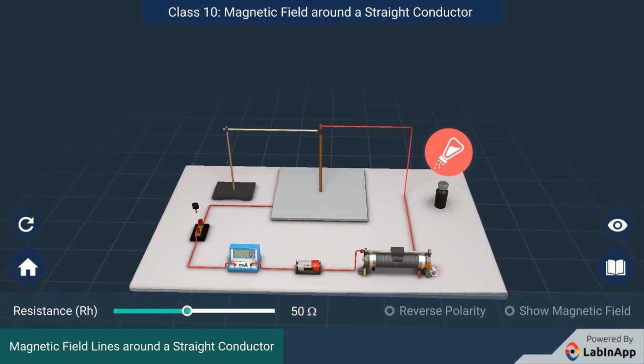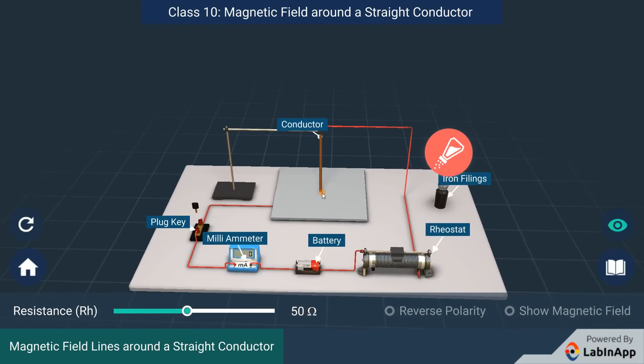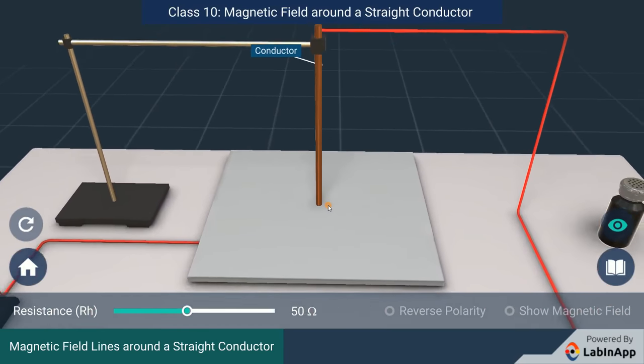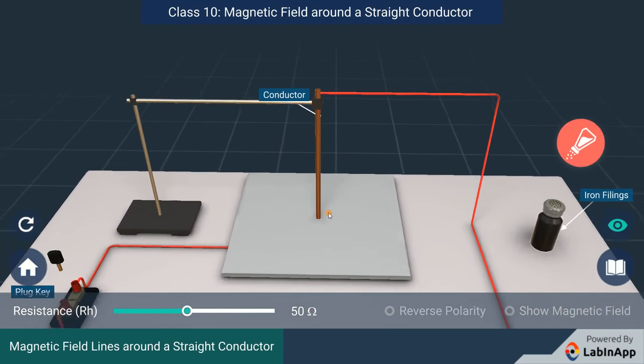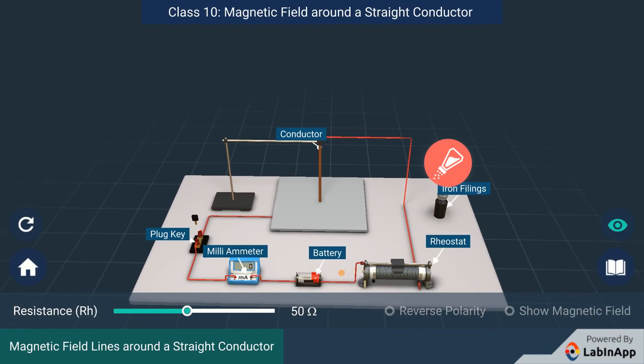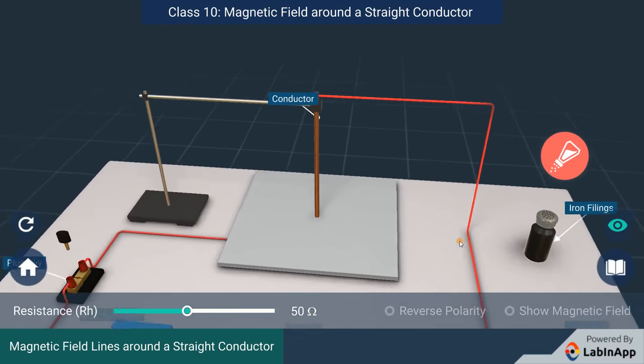We have taken a straight thick copper wire connected to an electric circuit to pass current through it, and iron filings in a sprinkler.